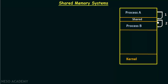Here we have a diagram of the shared memory system, the same kind of diagram that we saw in the previous lecture. We have process A and process B which want to communicate with each other. A region of shared memory is established, and using this region, process A and process B will communicate. Process A will write whatever it needs to communicate to this shared memory region, and process B will read from this shared memory region whatever process A has written.